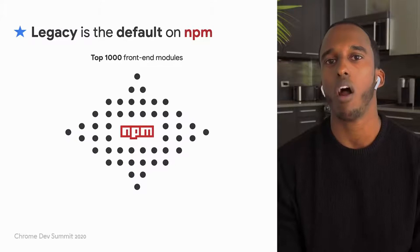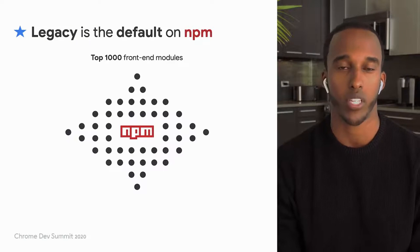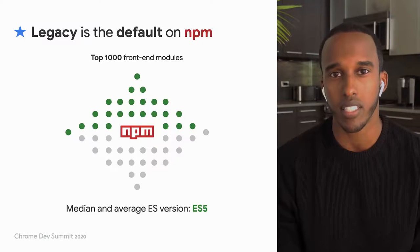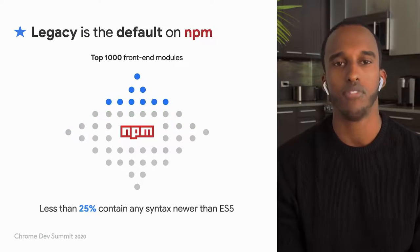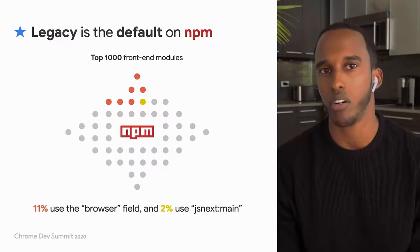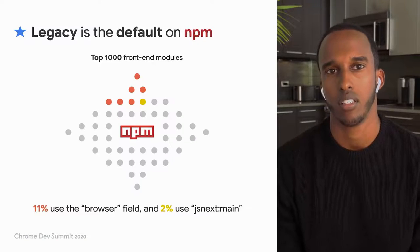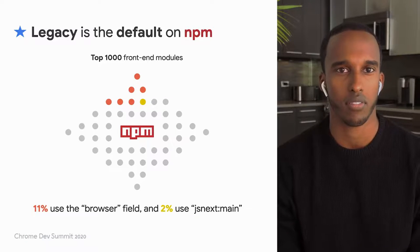A big part of that scale comes from how prevalent this issue is on NPM. If we take a look at the top thousand front-end modules on the NPM registry, the median syntax version is ES5. The average is also ES5. In fact, less than 25% contain any syntax newer than ES5. Only 11% of modules use the browser field, and 90% of these point to ES5. 2% of modules have a jsNext main field, and all but one are ES5. And only 9% of modules use the module field.